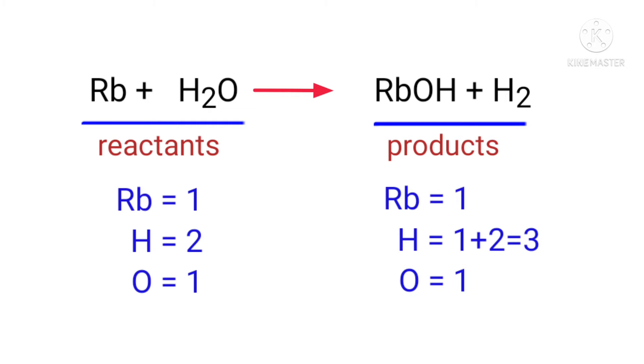In this equation, we need to balance the hydrogen atoms by making sure there are four hydrogen atoms on both sides. To do this, we need to put a coefficient of two in front of H2O and a coefficient of two in front of RbOH.